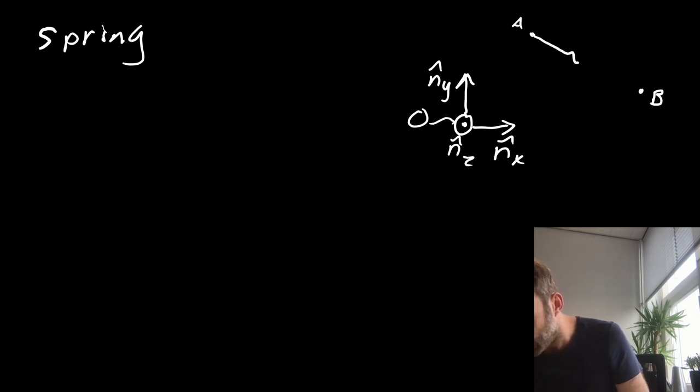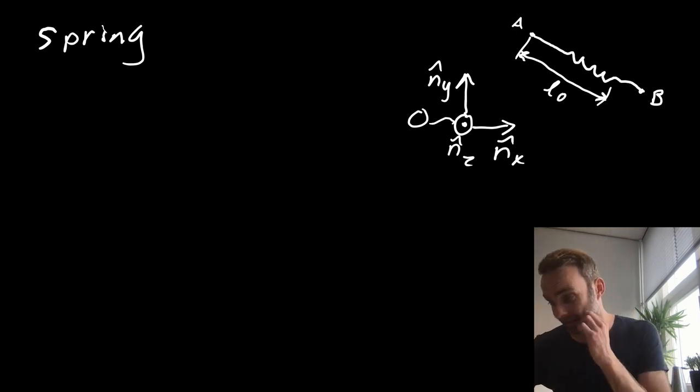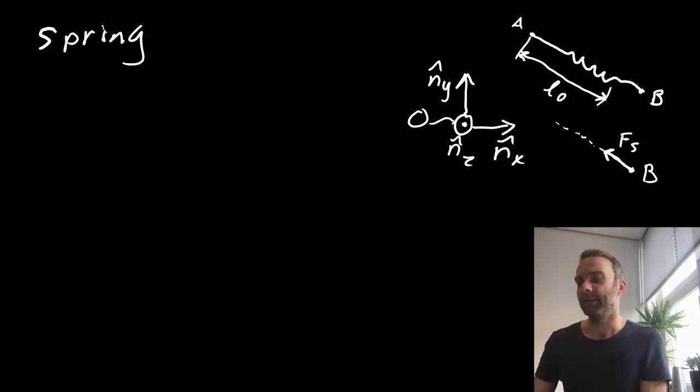And we have a point A and a point B. And in between these two points, we have a spring with some length L0. And in this case, we see that point A and B are so far apart that the spring is bigger than L0. So in this case, if we would draw a free body diagram on B, we would see that that would be a spring force Fs on B. And this spring force is parallel to the spring.